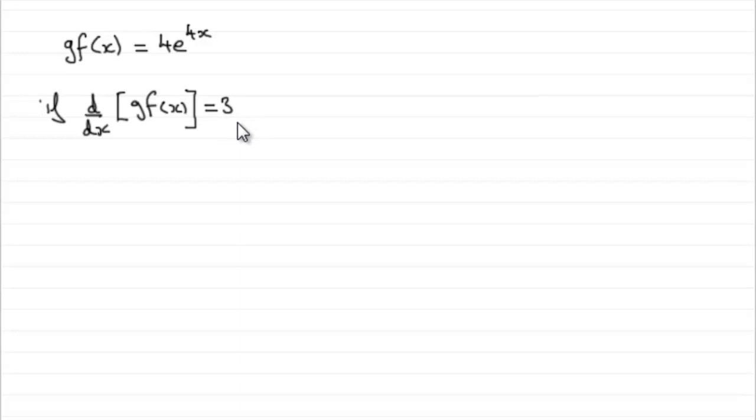So how do I do that? We need to start by differentiating 4e to the 4x, and if you were to differentiate that, you get the 4, that's this 4, multiplied by the differential of e to the 4x.